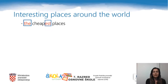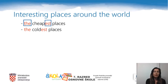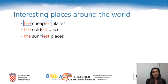Some of the places can be the coldest places or the sunniest places. If an adjective ends in 'y' like 'sunny', we should change the letter 'y' to the letter 'i'.